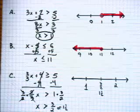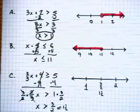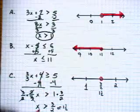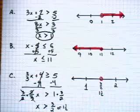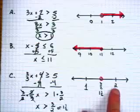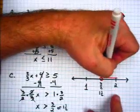x cannot equal 3 over 2. So we have to leave an open circle. But x is greater than 3 over 2. Well, on which side of 3 over 2 are the numbers greater? This way. So that's the direction we shade.